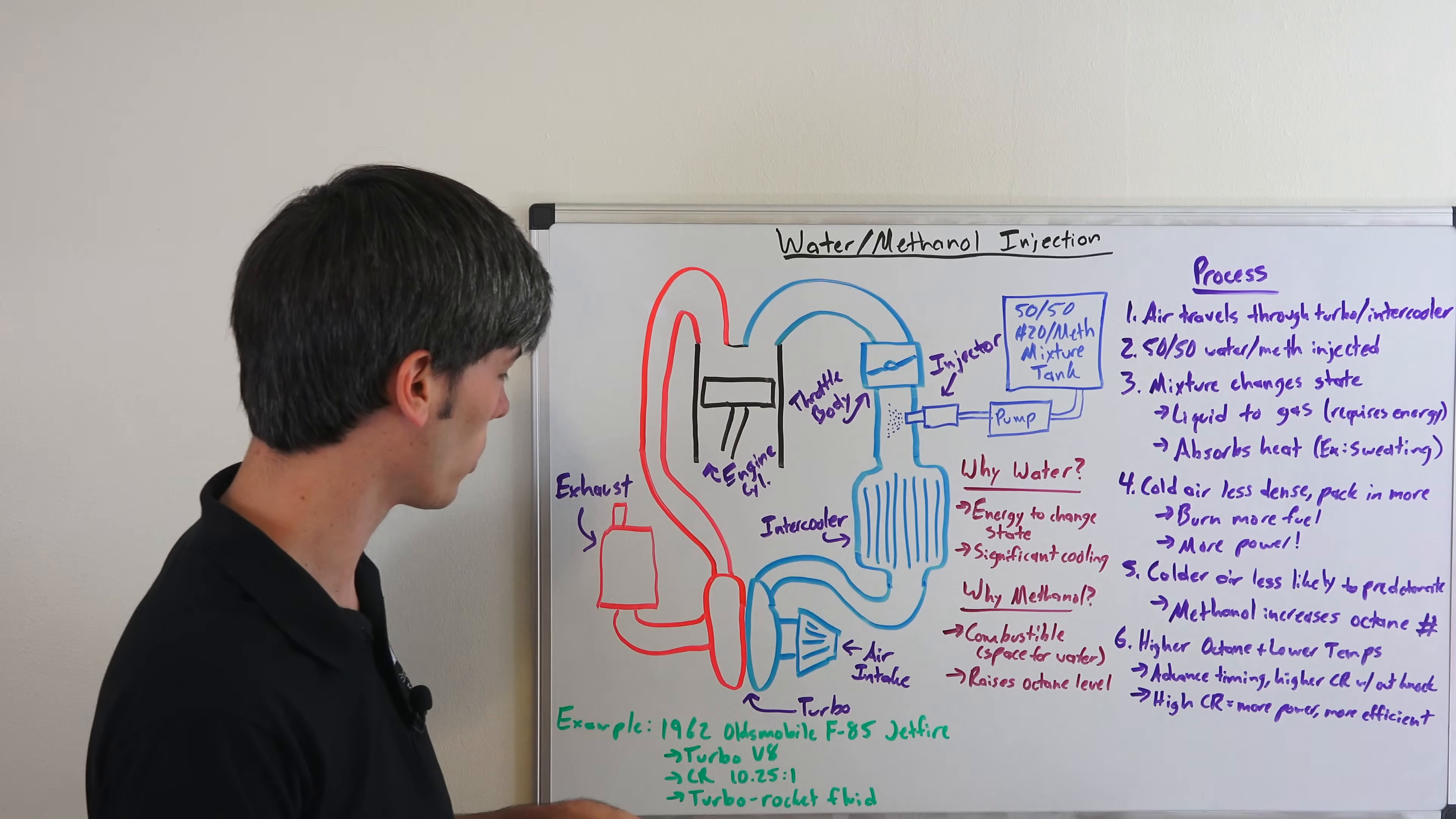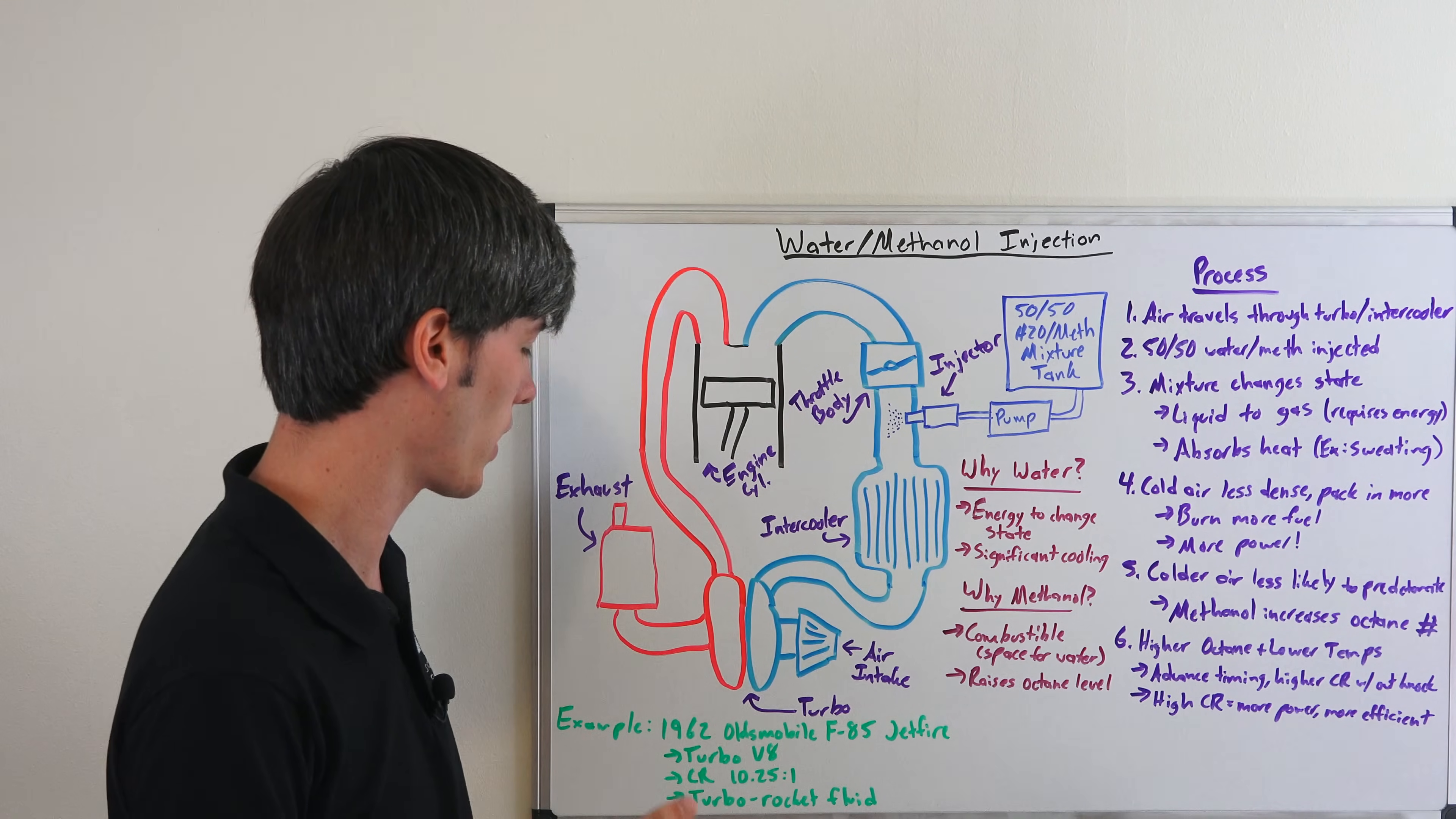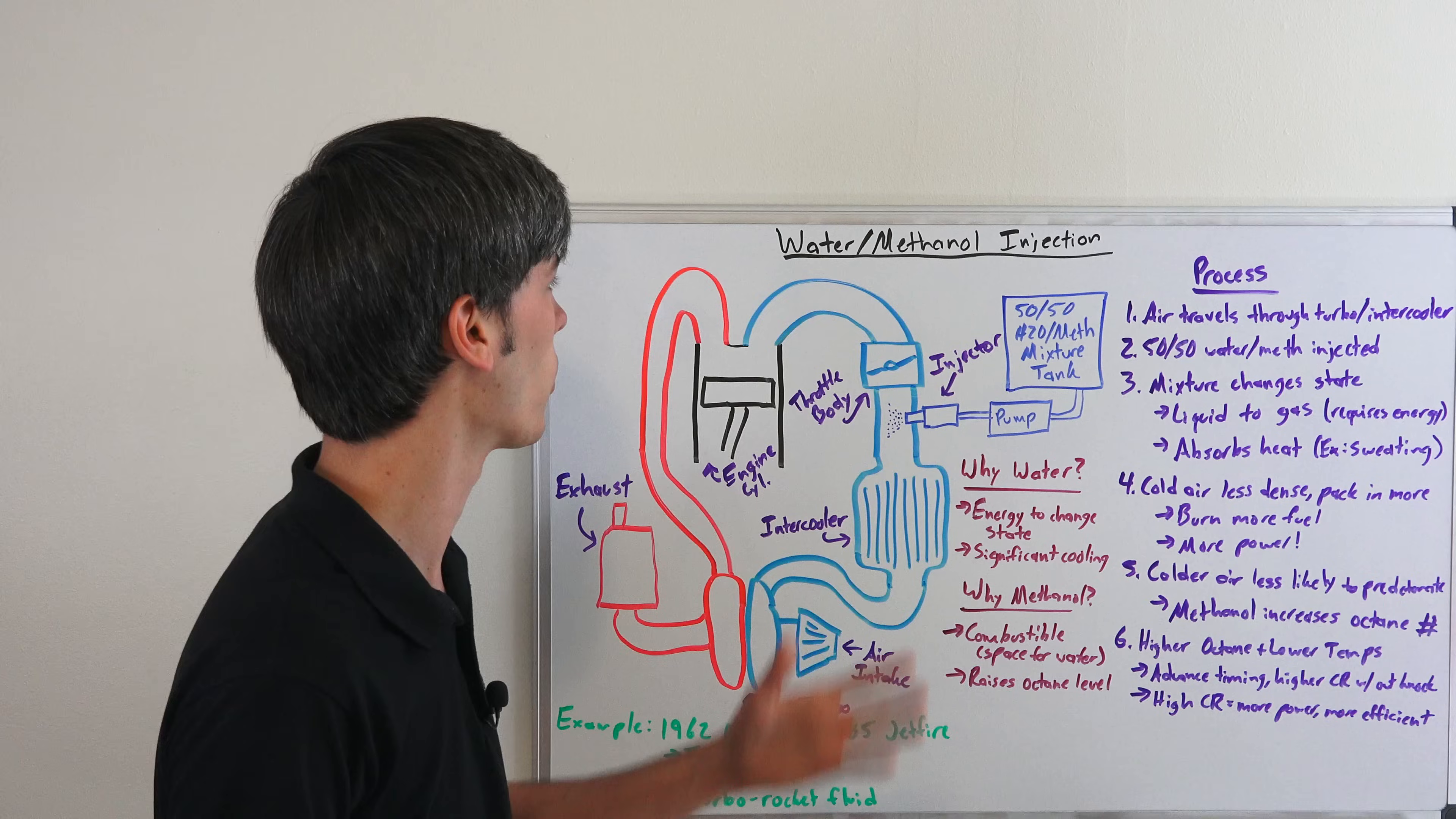One example of this being used in a production vehicle - I don't think there's any today that do this - but a 1962 Oldsmobile F85 Jetfire used this. It had a turbocharged V8 engine with a pretty high 10.25 to 1 compression ratio, which is still pretty high even by today's standards for turbocharged engines. My Subaru for example has 8.2 to 1, and this was actually putting out more torque than my current Subaru engine. They called the liquid turbo rocket fluid, which is a great marketing spin on water methanol injection.